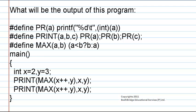What will be the output of this program? Three macro definitions are given here. The first one is 'pr', for which the definition is printf("%d", a). The second macro is print(a, b, c), for which the definition is pr, pr, and pr. In the next macro, max(a, b), the definition is given as a less than b ? b : a.